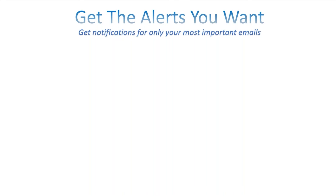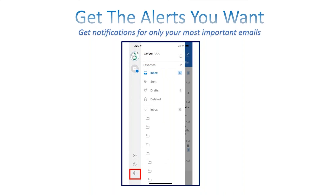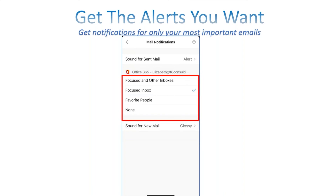Another important mobile setting is notifications — on your phone, you really only want alerts for your most important emails, especially when on the go. Go into Settings again via your avatar and the gear icon, then under Mail go into Notifications. Here you can choose to get notifications from both your Focus and Other inboxes, just your inbox, your favorite people only, or turn notifications off entirely. Turning them off is great for vacations or weekends.